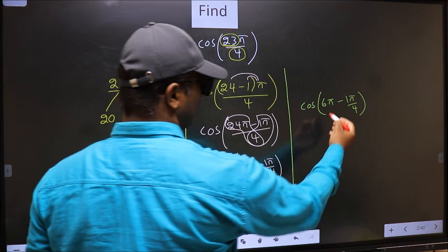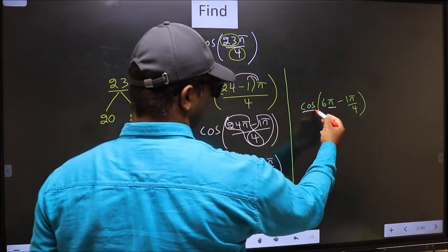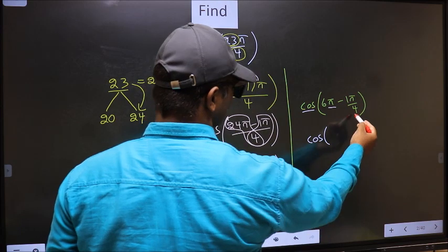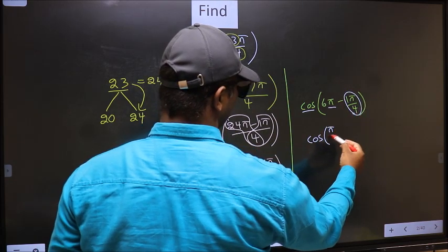Next. Here we have π. So cos is not going to change. It will remain cos, and inside we get this angle: π by 4.